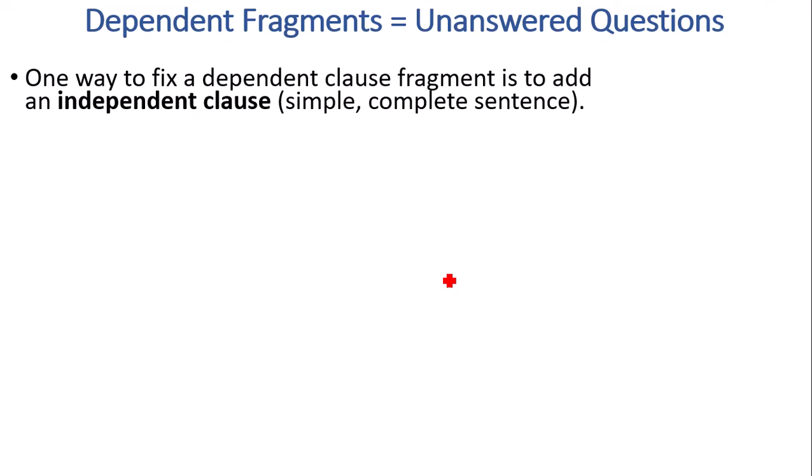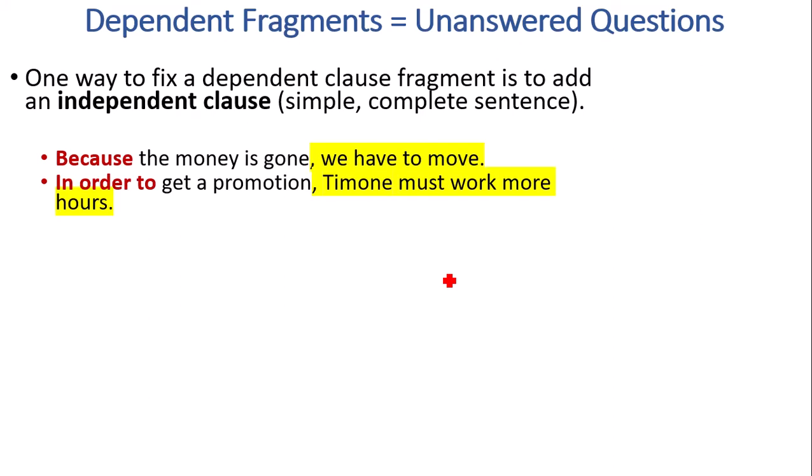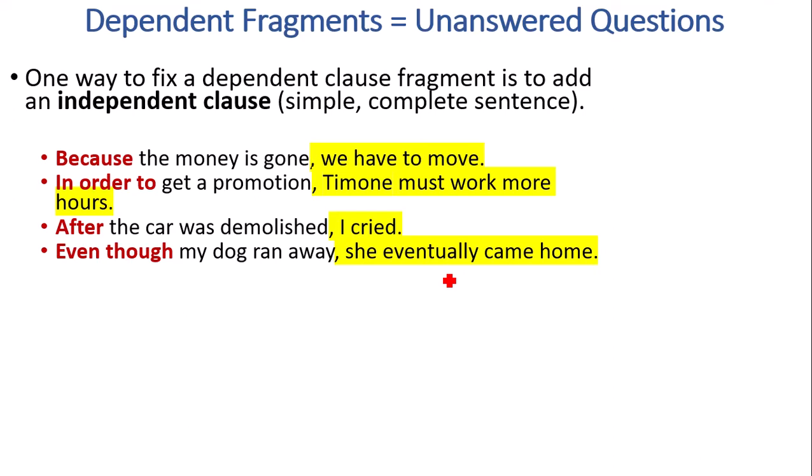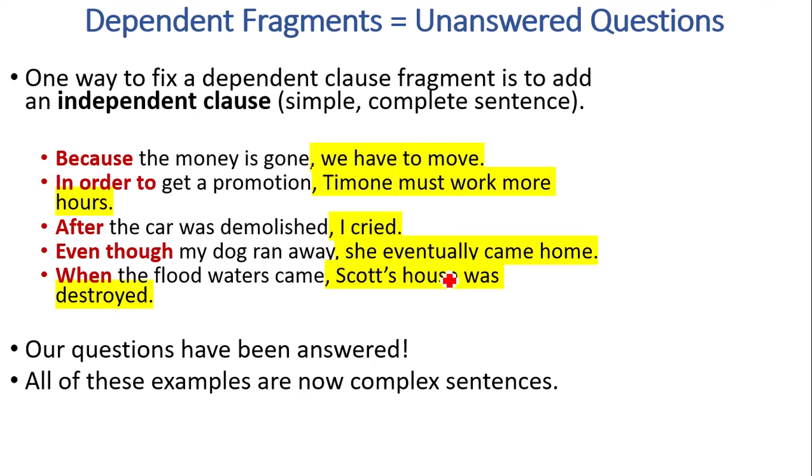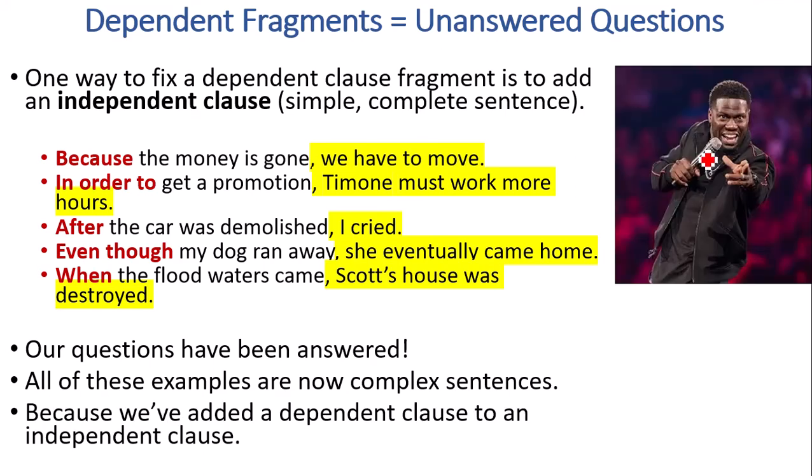So in order to answer our questions, we need to add an independent clause, also known as a simple or complete sentence. Because the money is gone, comma, we have to move. In order to get a promotion, Timon must work more hours. After the car was demolished, I cried. Even though my dog ran away, she eventually came home. When the floodwaters came, Scott's house was destroyed. Our questions have been answered. All of these examples are now complex sentences. We have the dependent clause, the comma, and then the independent clause. This way, we've turned those dependent clause fragments into complete sentences.